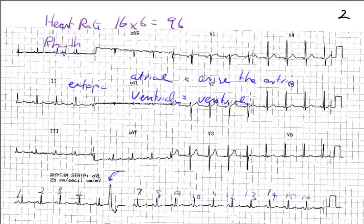A lot of people think that an atrial ectopic will have an unusual P wave followed by a QRS, but this is not always the case and can be a trap. Sometimes you might even see a little P wave in front of a ventricular ectopic, so that's not a reliable method. The best way is to try and work out exactly what's happening.